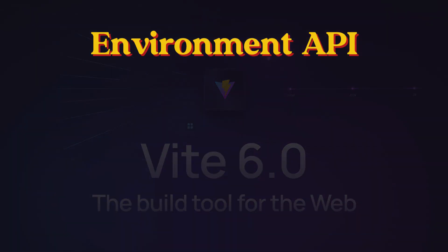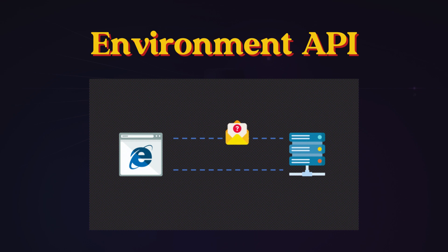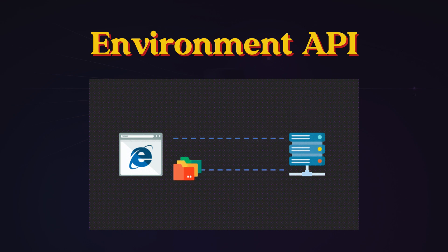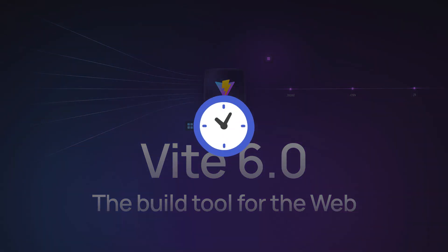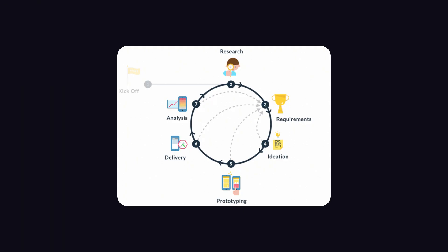The Environment API acts as a universal testing ground. You can run browser simulations, execute server-side logic in Node.js, and test edge scenarios all within a single environment. This unified approach saves time, reduces complexity, and makes your development process more efficient.